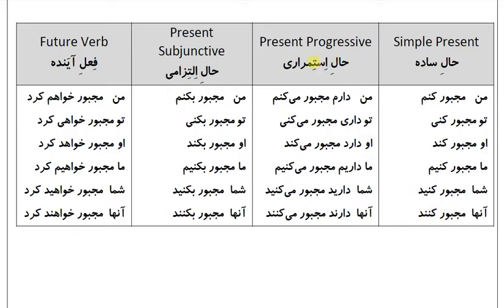حال استمراری (Present Continuous): من دارم مجبور میکنم، تو داری مجبور میکنی، او دارد مجبور میکند، ما داریم مجبور میکنیم، شما دارید مجبور میکنید، آنها دارند مجبور میکنند. حال التزامی: من مجبور بکنم، تو مجبور بکنی، او مجبور بکند، ما مجبور بکنیم، شما مجبور بکنید، آنها مجبور بکنند.